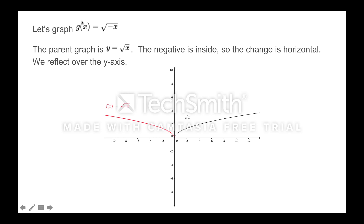What if we wanted to graph g(x) = √(−x)? First we decide which basic graph we're using: we're using √x, this black graph. Now where's the negative? It's inside — under the square root. Anything inside is a horizontal change, so we're going to flip this graph and rotate it around the y-axis. This red graph is the graph of f(x) = √(−x).